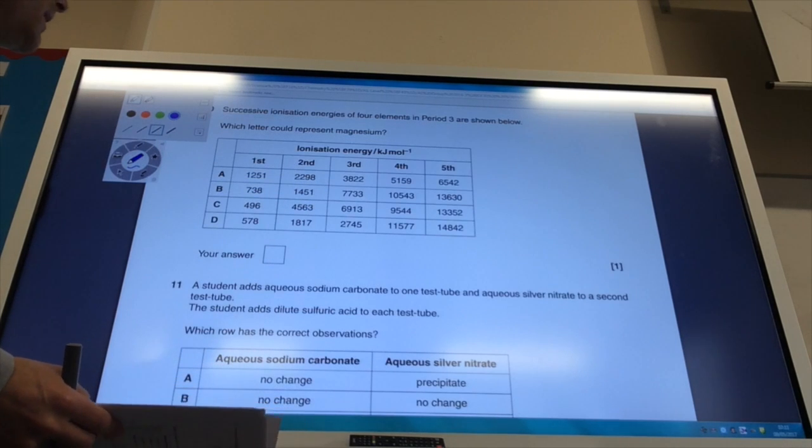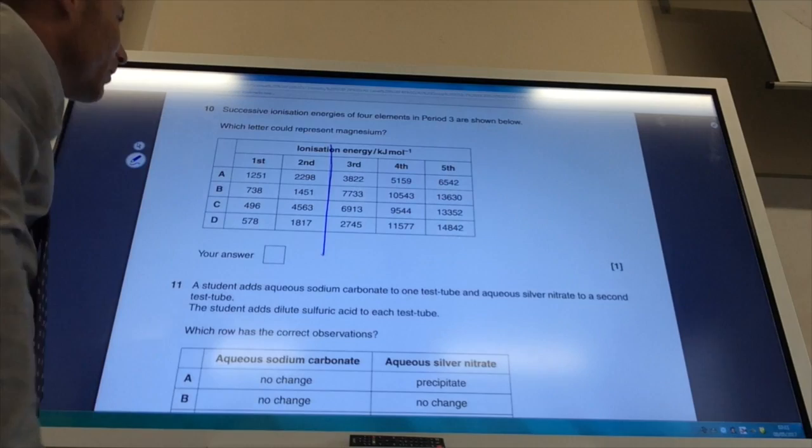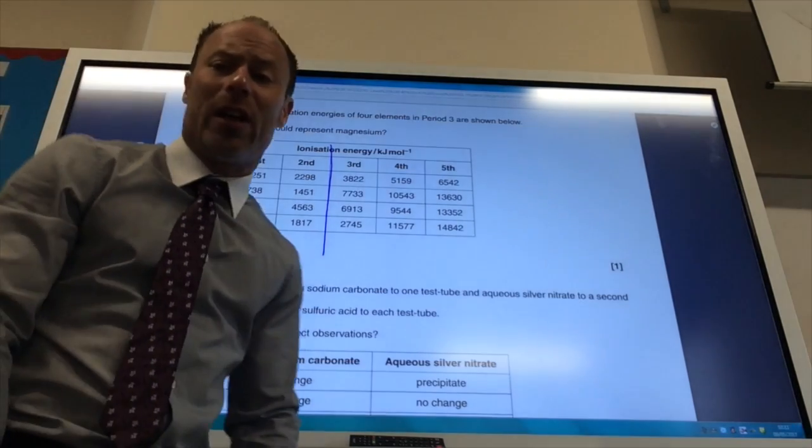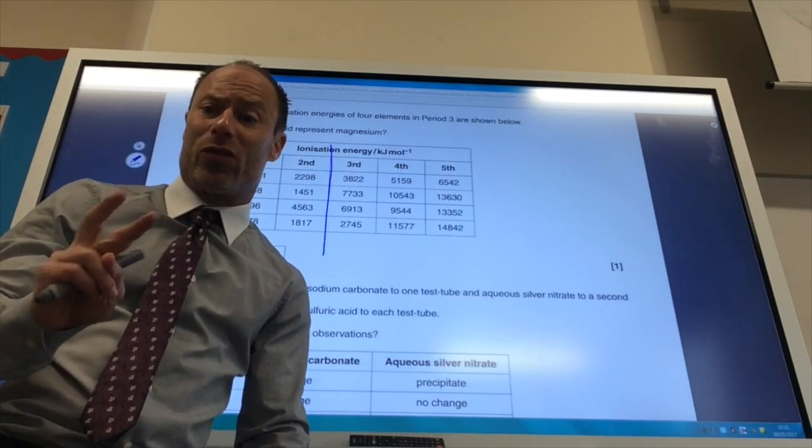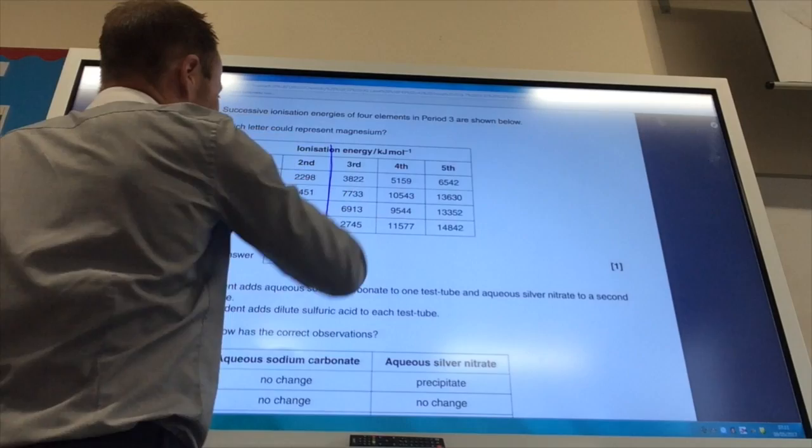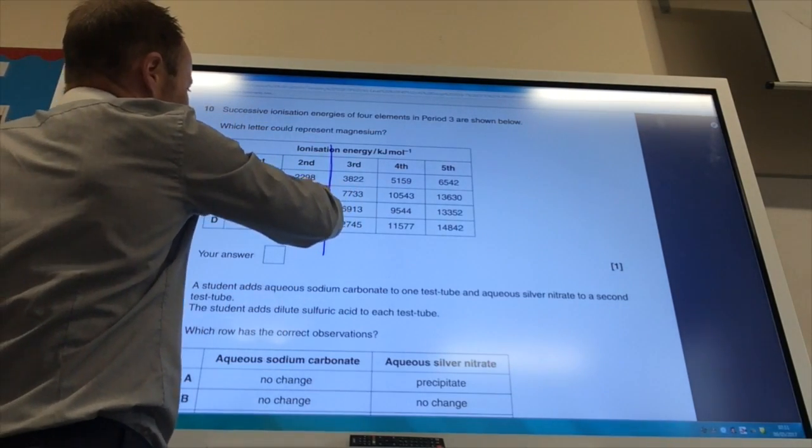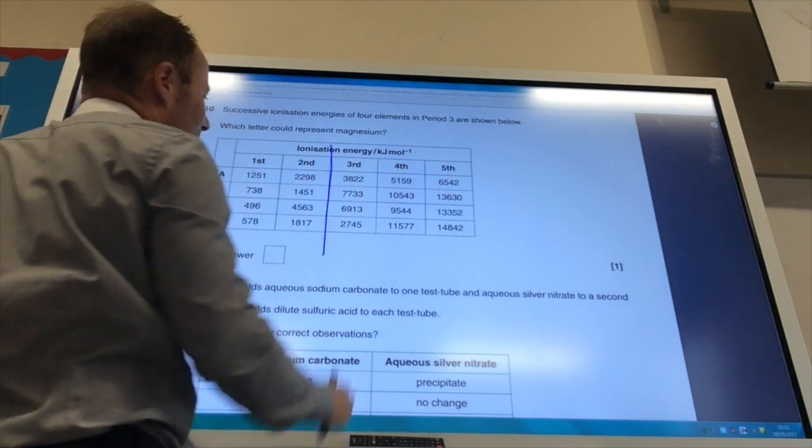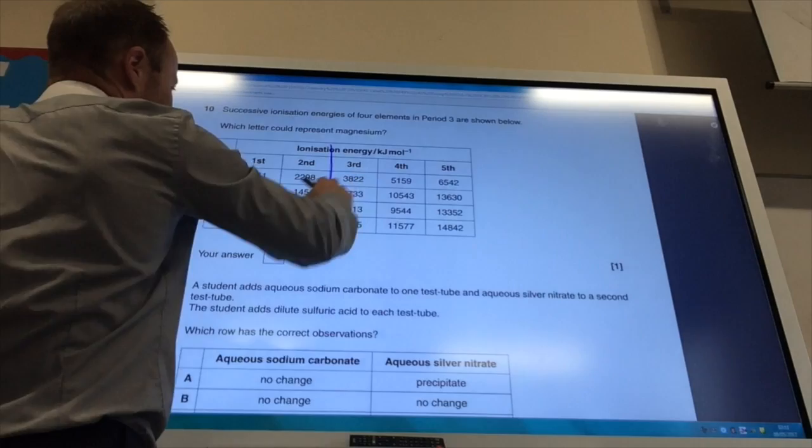Successive ionization energy of 4 elements in period 3 is shown. Which letter could represent magnesium? If it's magnesium, you're looking for a big jump after you've removed the first 2 electrons because magnesium is in group 2. Once you remove those 2 electrons, you're into the next shell. You should be able to see there is a massive jump for B, from 1450 to 7733, so the answer is B.